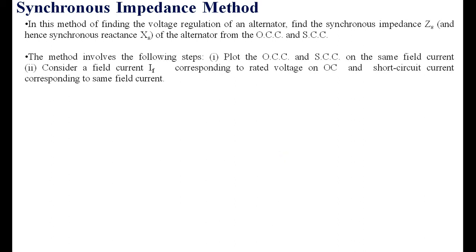The method involves the following steps. The first step is to plot the open circuit characteristics and the short circuit characteristics on the same field current base. You have to take field current as a common base, then take the open circuit voltage on the Y-axis as well as the short circuit current. You have to take per-phase values, because usually in numerical problems the line-to-line voltage is mentioned, which you must convert into phase voltage before drawing the open circuit characteristics.